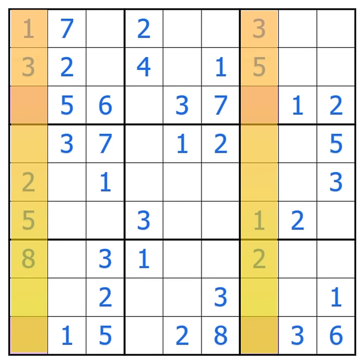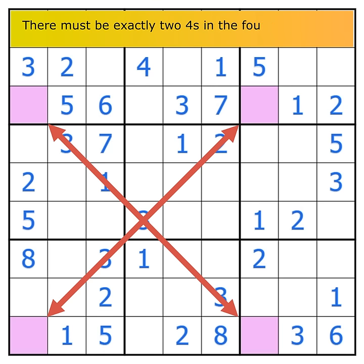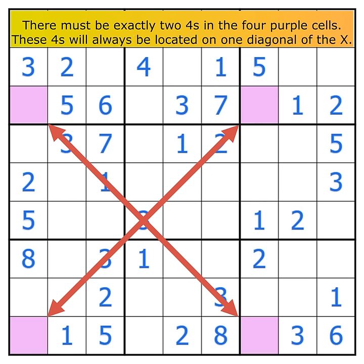But we also know now there will be exactly two fours in the purple cells in this puzzle. So there cannot be any more fours in column 1 and column 7 other than in the purple cells.